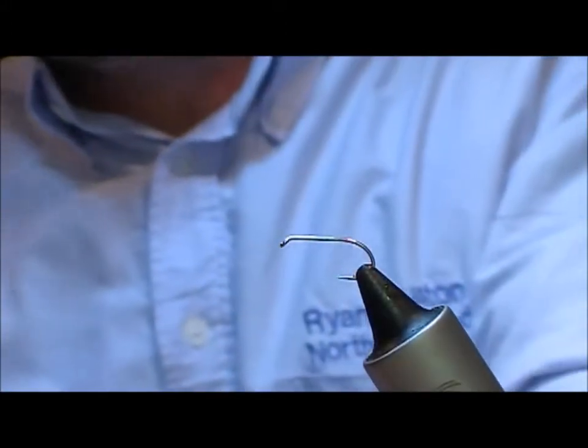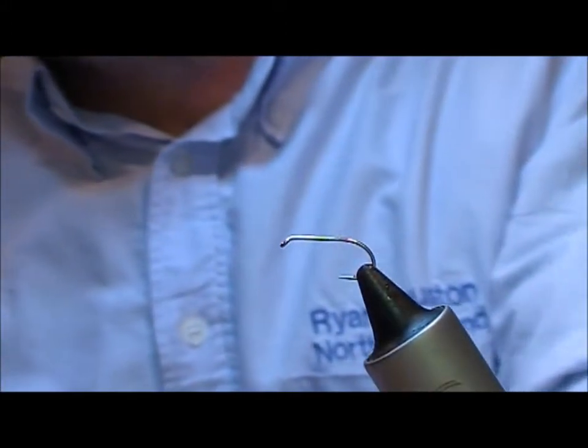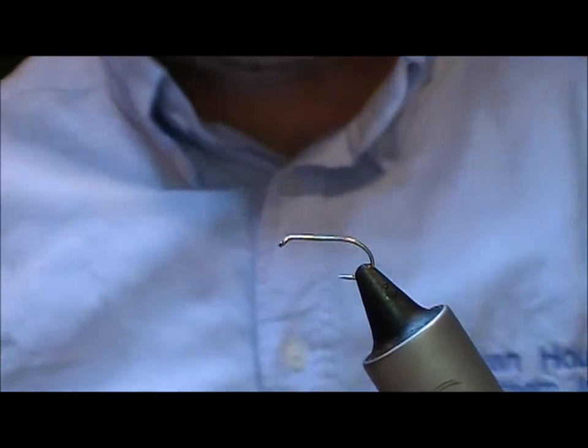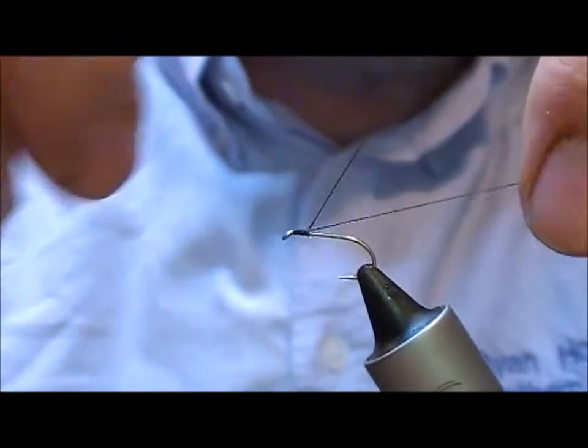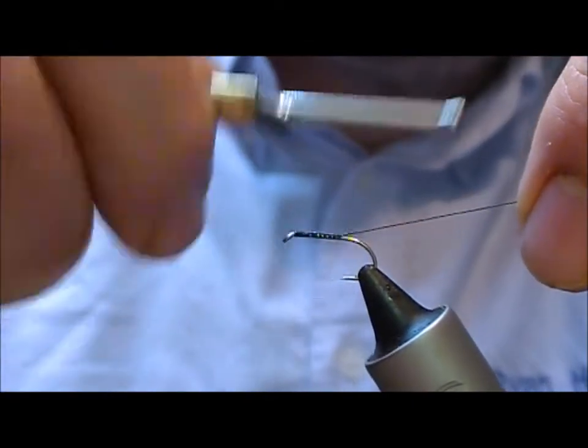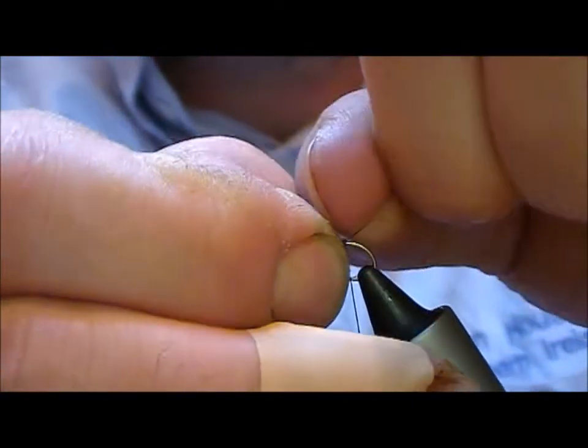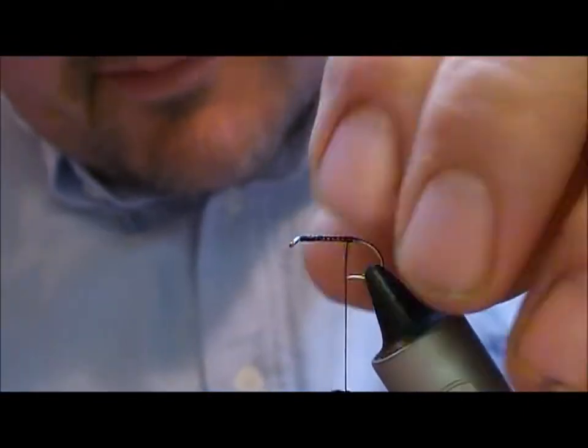I'm going to tie the CDC and Elk, which is a simple sedge imitation. This is a size 12B170. Generally you'll be tying this fly probably smaller than this, but for the purposes of making a video it's quite difficult to see a size 14 or 16 or smaller.